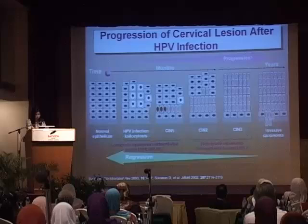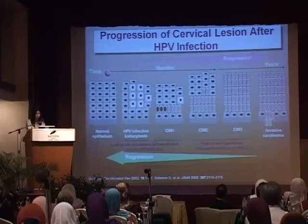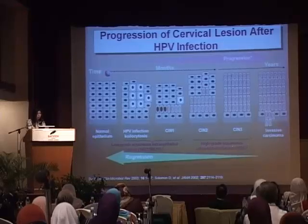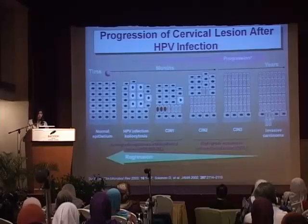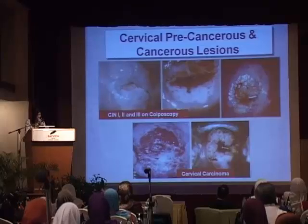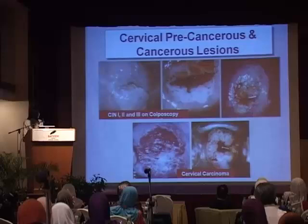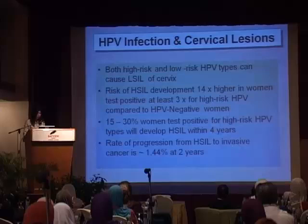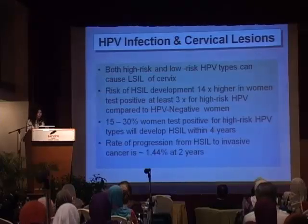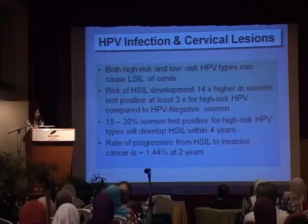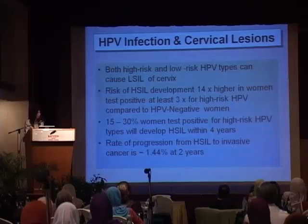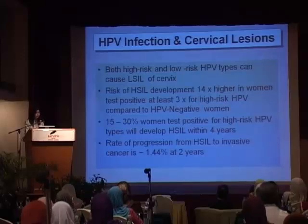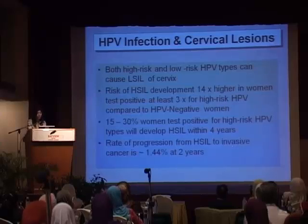This schematic diagram shows the carcinogenesis of HPV infection on the cervical epithelium — over time, the normal epithelium is transformed into invasive carcinoma in the presence of HPV. These are examples of what we can see on colposcopy for CIN-1, CIN-2, and CIN-3 patients, along with the process of cervical carcinogenesis. Both high-risk and low-risk HPV types can cause low-grade cervical intraepithelial lesions. The risk of high-grade lesion development is 14 times higher in women who test positive for high-risk HPV at least three times compared to HPV-negative women. Fifteen to 30% of women who test positive for high-risk HPV types will develop high-grade lesions within four years, and the rate of progression from high-grade lesions to invasive cancer is approximately 1.5% at two years.